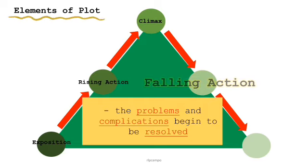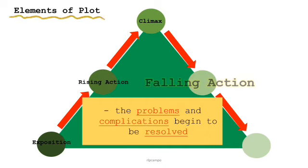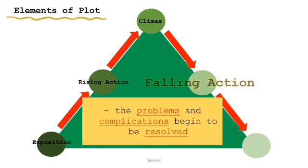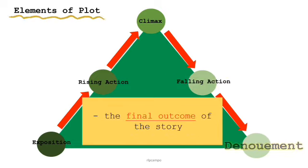After the climax is the falling action, in which the problems and complications begin to be resolved — in short, it leads to the resolution of the conflict. The last part is the denouement, which is the final outcome of the story.